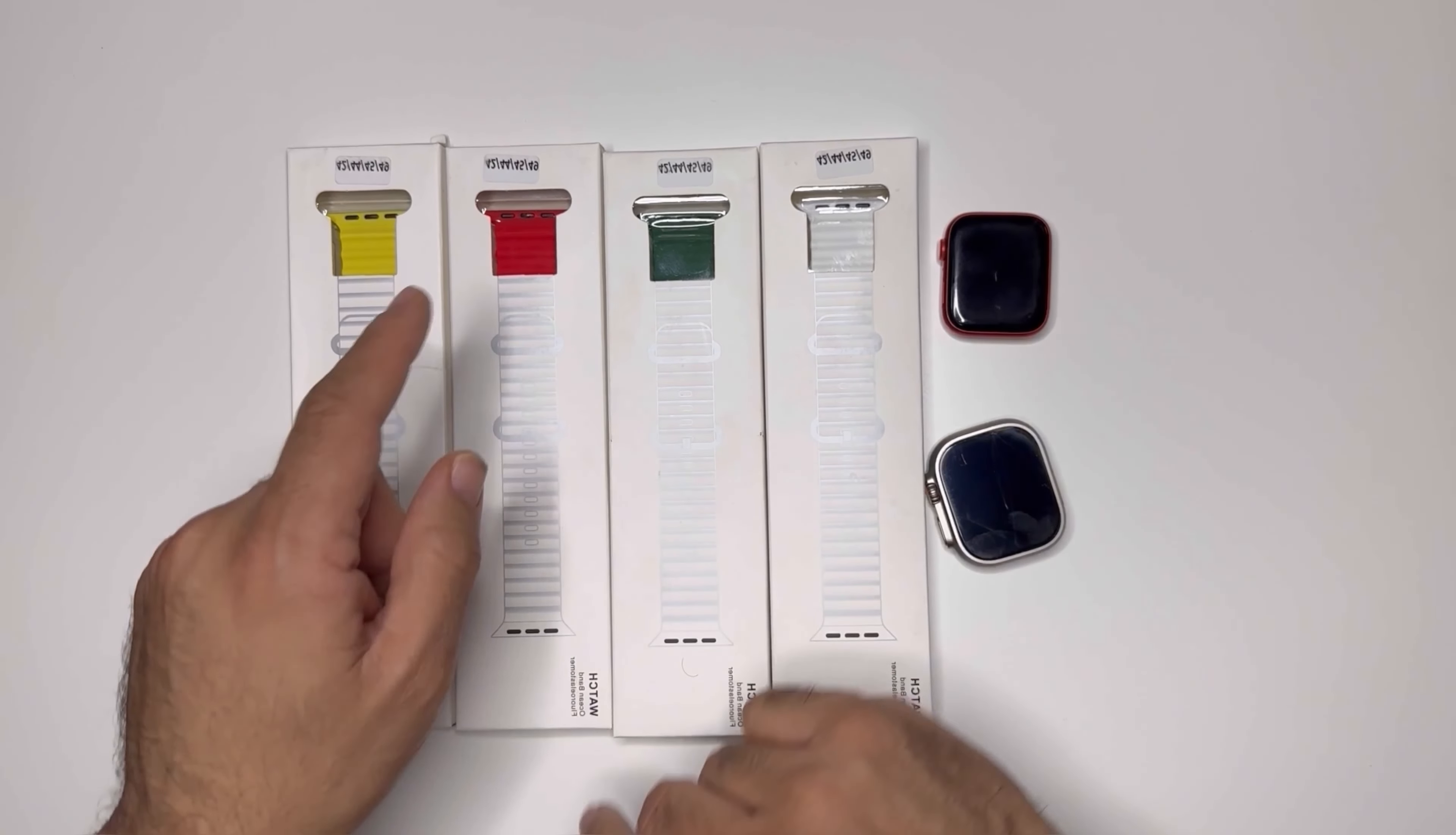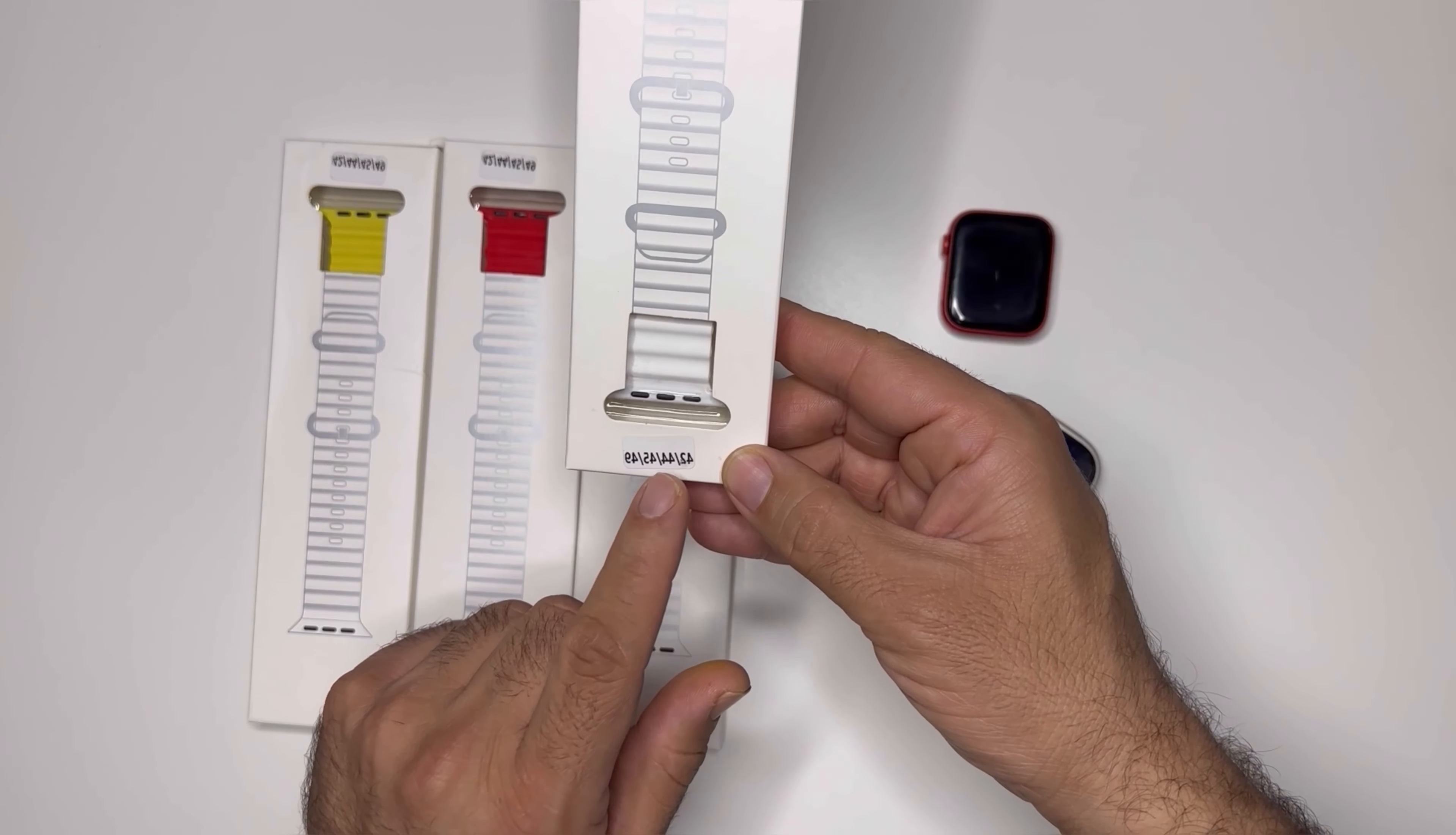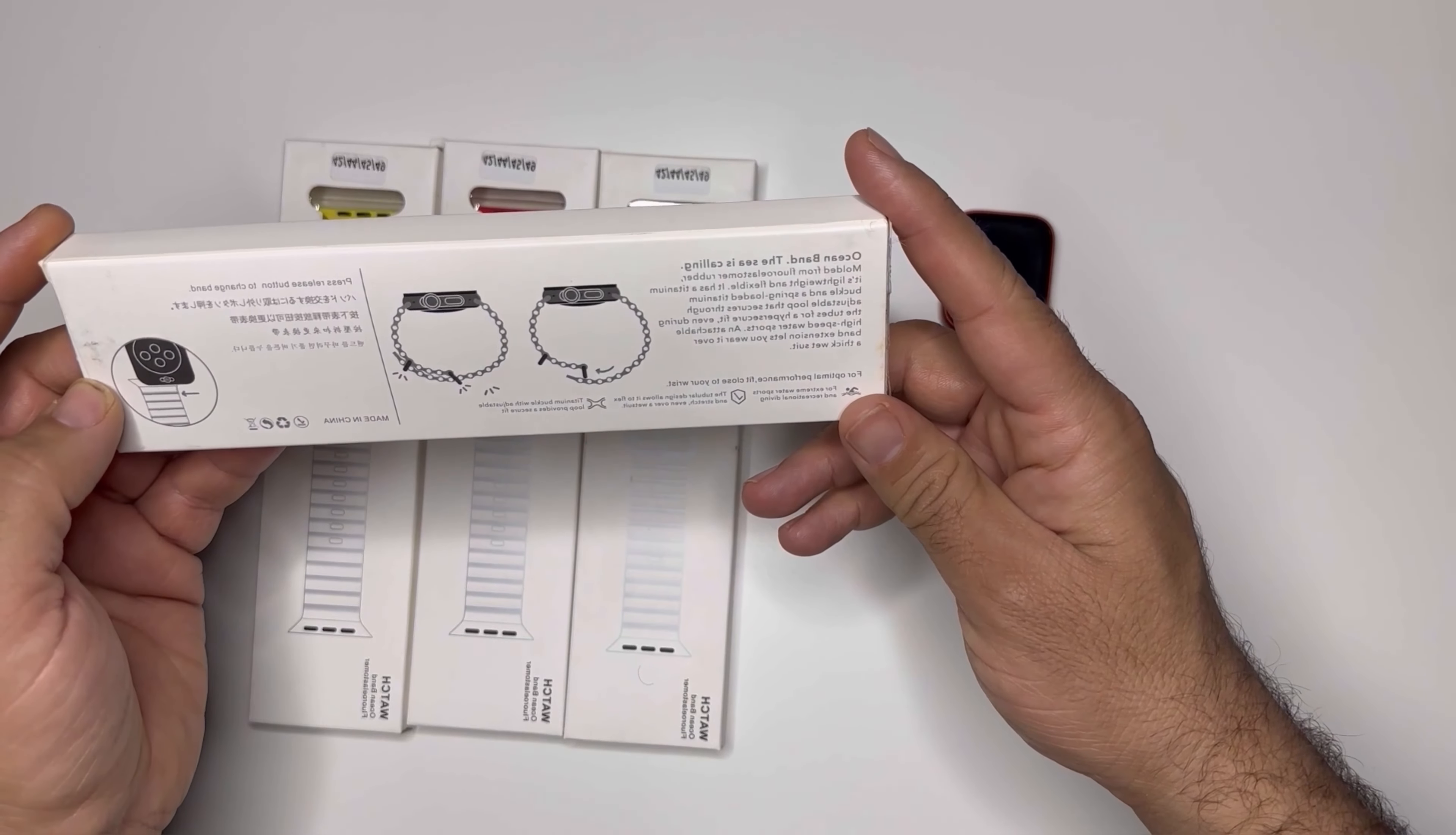In the local market it is also available in multiple colors - it was available in a lot of colors but I chose these. On the box it clearly says that it can be used with 42, 44, 45, and 49mm. This is the Watch Ocean band, and this is how it looks on the back of the box.